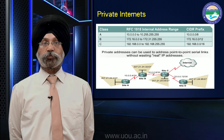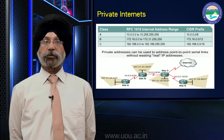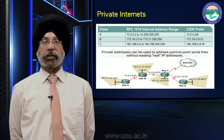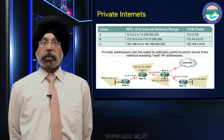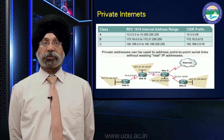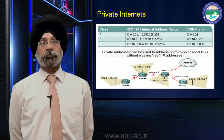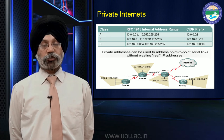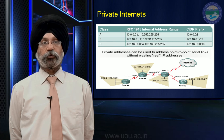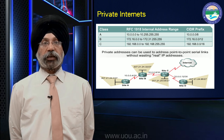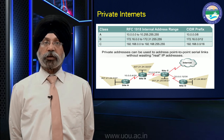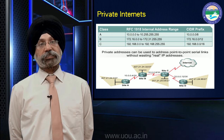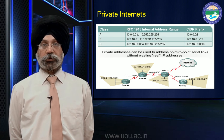In class B we have the 172 network, and in class C we have the 192 network. That is why when we build home networks, we use 192.168.0.0 addresses. For class B private networks, we use 172, and for class A private networks, we use the 10 network.